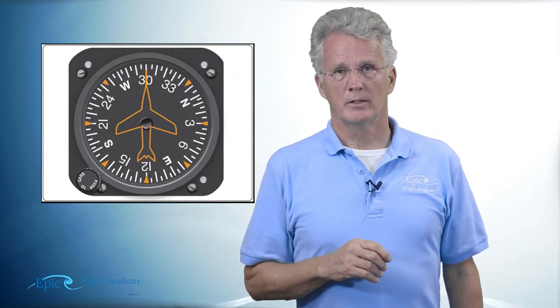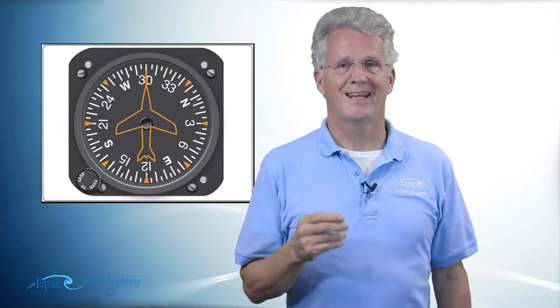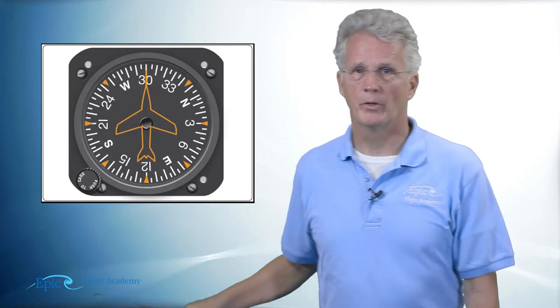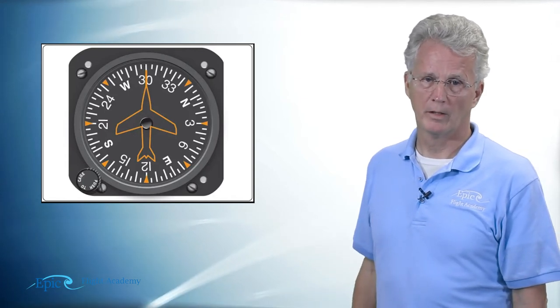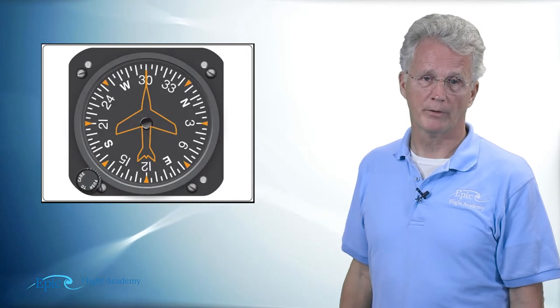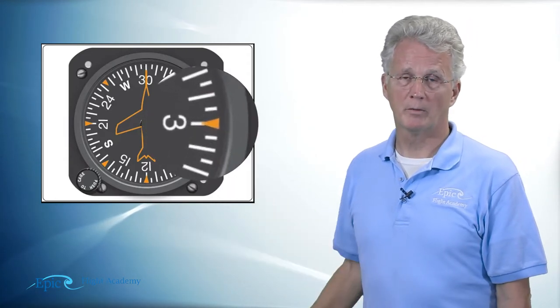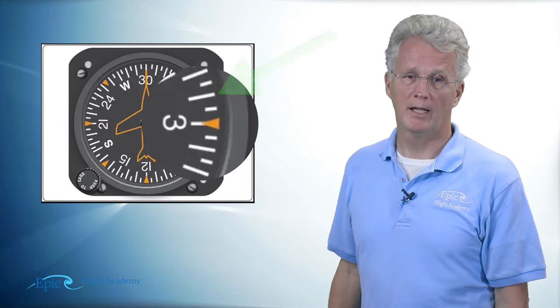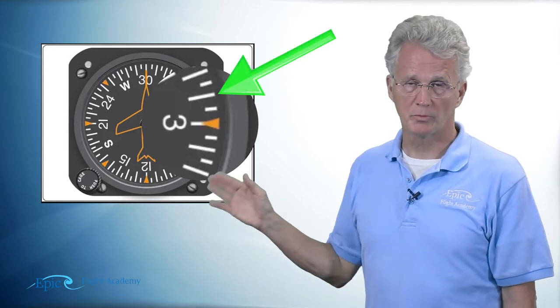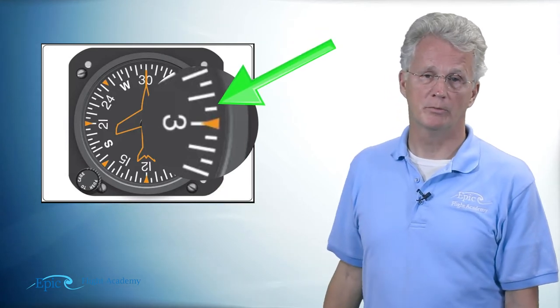Those indicate in tens, so the 3 means 30, the 6 means 60, and so on. Now in between those, if you look closely, you can break it down further. So there's a big white tick mark for each 10 degrees and then there's small tick marks in between.